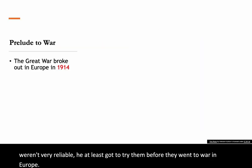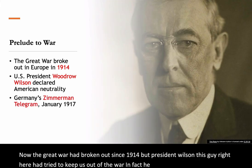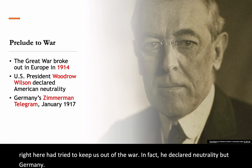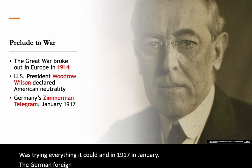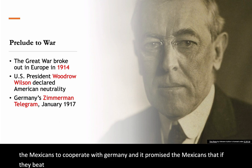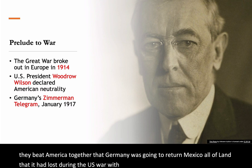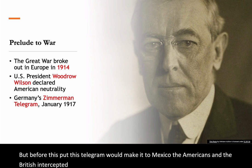The Great War had been going on since 1914, but President Wilson had tried to keep the U.S. out of the war — in fact, he declared neutrality. But Germany was trying everything it could. In January 1917, the German Foreign Office wrote a telegram to Mexico, hoping to get the Mexicans to cooperate with Germany. It promised Mexico that if they beat America together, Germany would return all the land Mexico had lost during the U.S.-Mexico War of 1846 to 1848. But before the telegram reached Mexico, the Americans and British intercepted it.